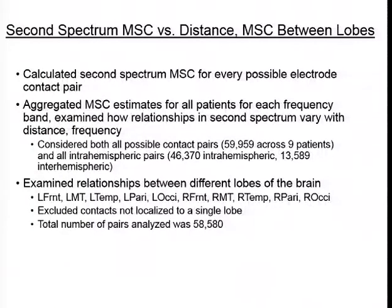We also examined relationships between different lobes of the brain, looking at left and right frontal, medial temporal, temporal, parietal, and occipital. We excluded contacts that could not be localized to a single lobe — for example, if a contact was directly above the Sylvian fissure and couldn't be assigned to either frontal or temporal. This left us with 58,580 contact pairs for that analysis.